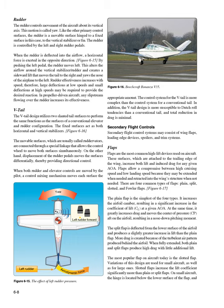The rudder controls movement of the aircraft about its vertical axis—a motion called yaw. Like other primary control surfaces, the rudder is a movable surface hinged to the vertical stabilizer or fin, controlled by the left and right rudder pedals. When deflected into the airflow, a horizontal force is exerted in the opposite direction. Pushing the left pedal moves the rudder left, altering airflow around the vertical stabilizer/rudder and creating a sideward lift that moves the tail right and yaws the nose left. Rudder effectiveness increases with speed; large deflections may be needed at low speeds and small deflections at high speeds. In propeller-driven aircraft, slipstream flowing over the rudder increases its effectiveness.